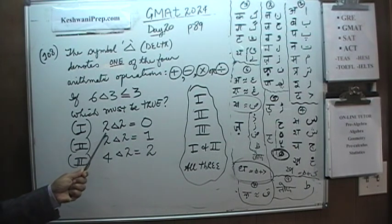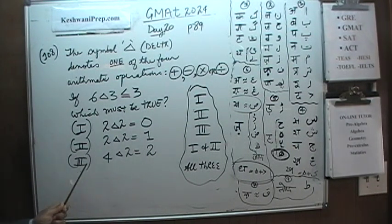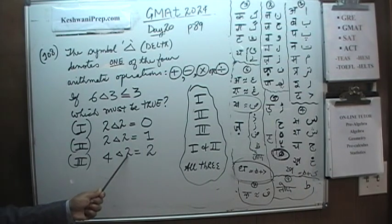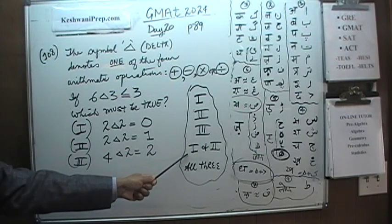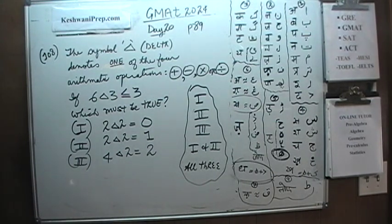We are also told that 6 delta 3 is less than or equal to 3. The question is if that is the case then which must be true. There are three statements here. First statement says 2 delta 2 equals 0. Second one says 2 delta 2 equals 1. The third one says 4 delta 2 equals 2 and these are the answer choices: 1 only, 2 only, 3 only, 1 and 2 only or all 3. Go ahead and do it yourself.